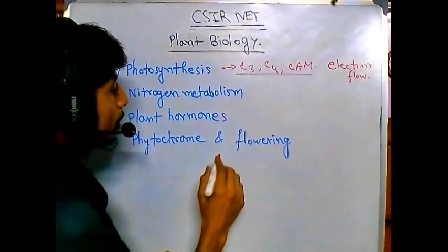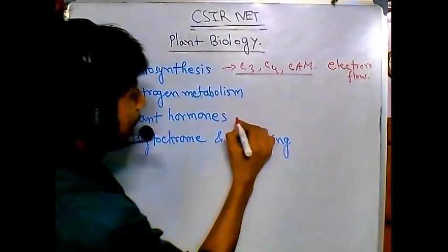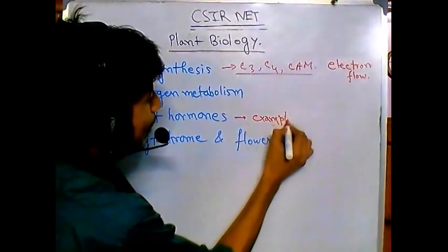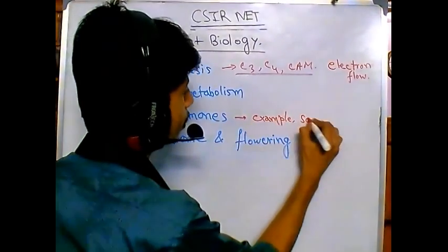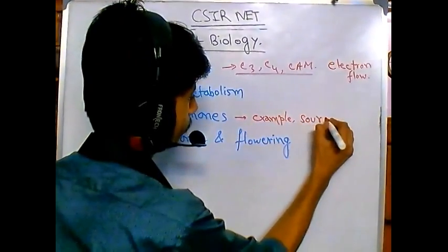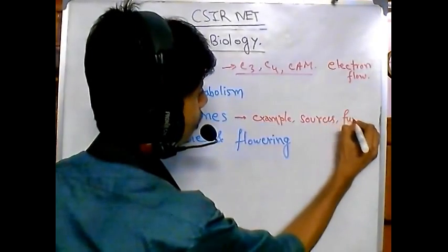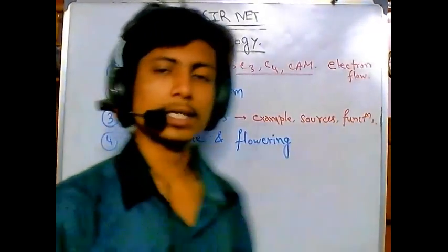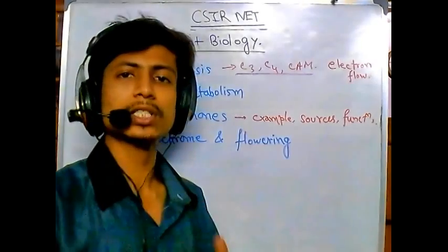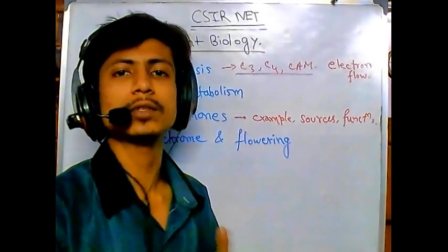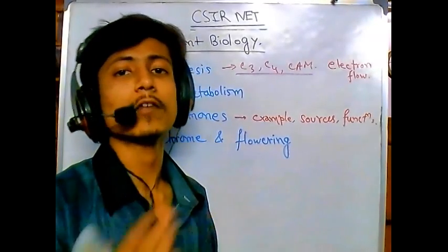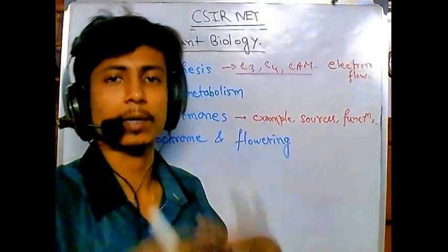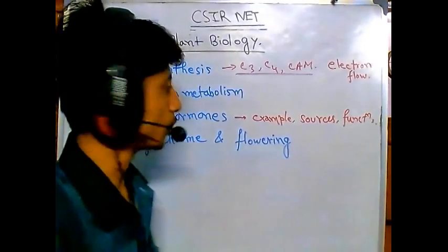The third topic is plant hormones. You need to learn examples of hormones, their sources, and their functions. Beyond that, you also need to understand the sequential release of those hormones during plant development — how they are released and what effects they ultimately produce.